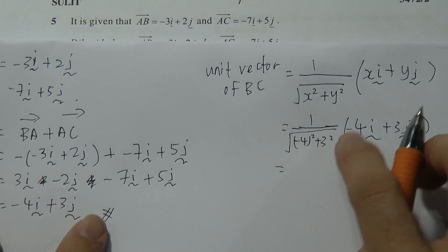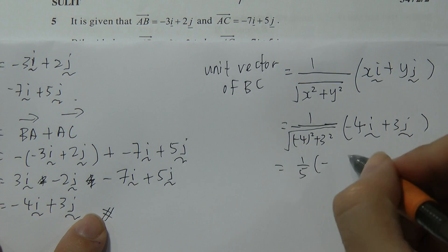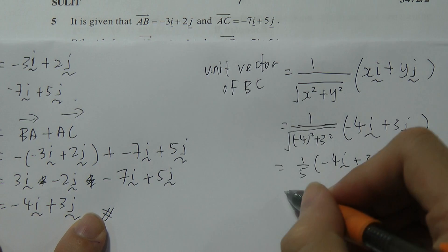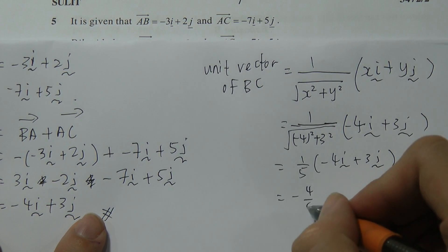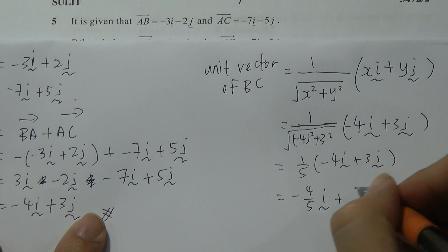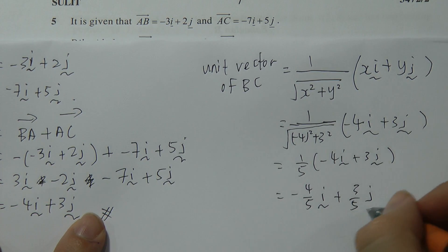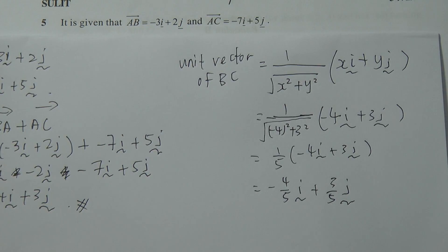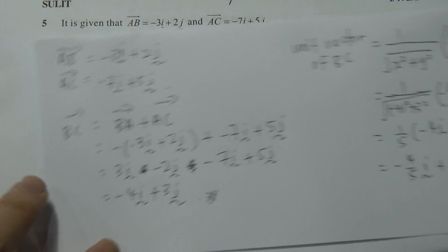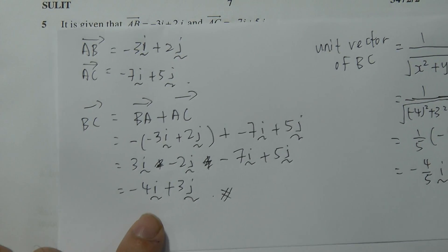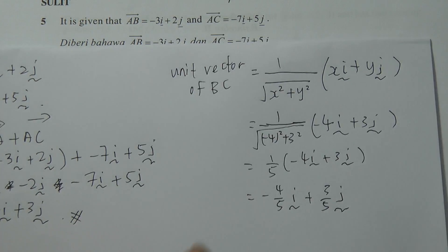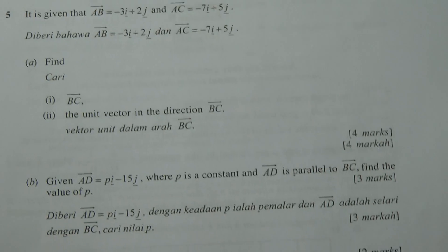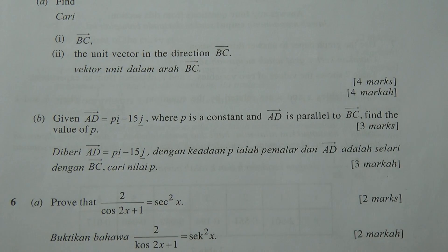The square root of (16 + 9) equals the square root of 25, which is 5. So the unit vector equals one-fifth times (negative 4i plus 3j), or equivalently negative four-fifths i plus three-fifths j.